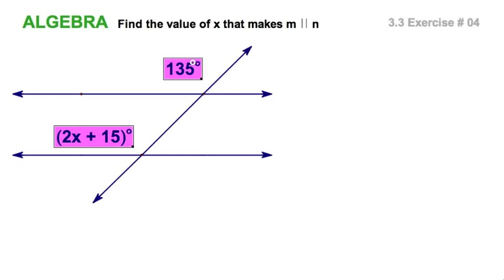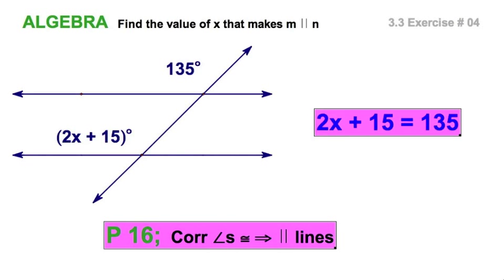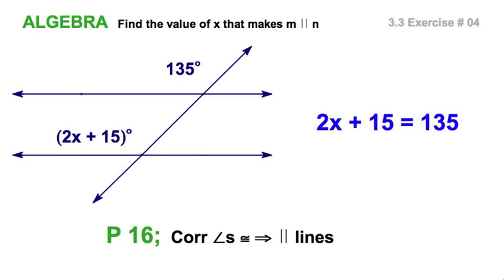Well, here's another case where I'm looking at corresponding angles. We need to recognize those so in order to make these two lines parallel, I'd have to have these two angles congruent. Corresponding angles that would make the lines parallel. So we just have to set these two expressions equal to each other and solve for x and we're done.